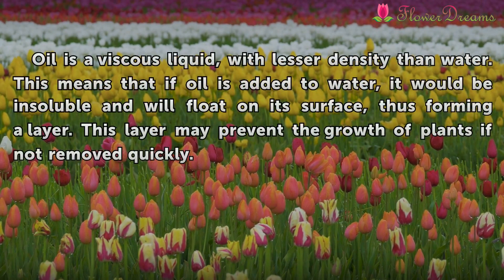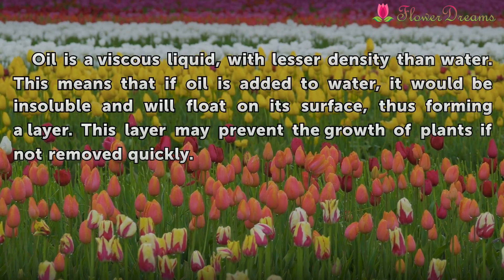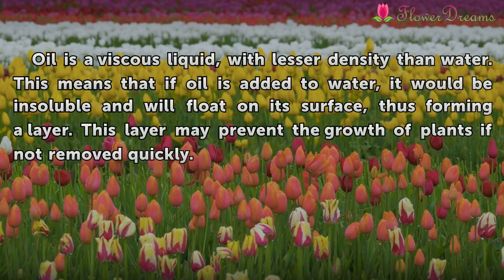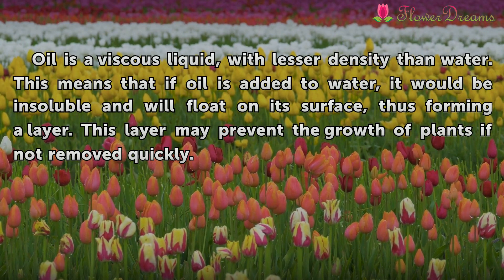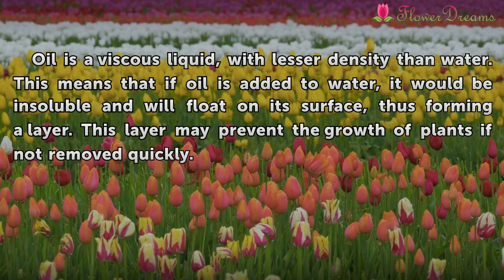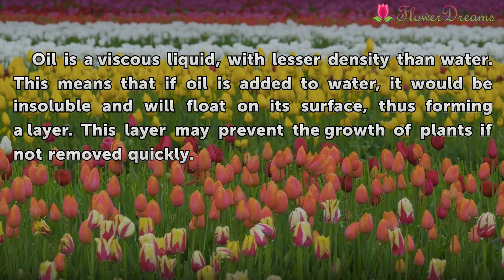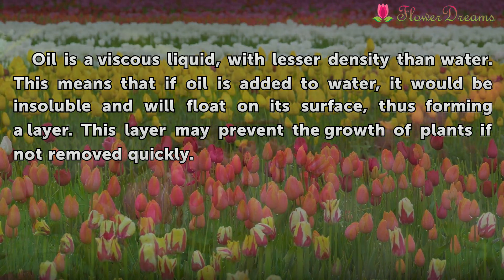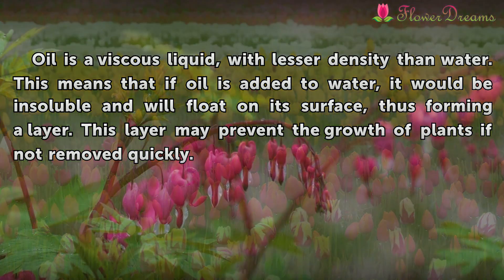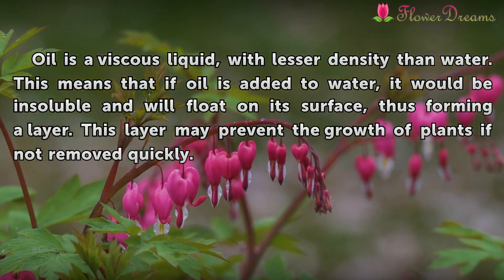Oil is a viscous liquid with lesser density than water. This means that if oil is added to water, it would be insoluble and will float on its surface, thus forming a layer. This layer may prevent the growth of plants if not removed quickly.